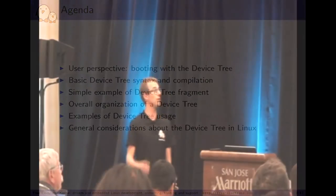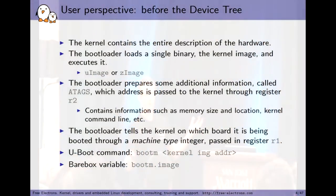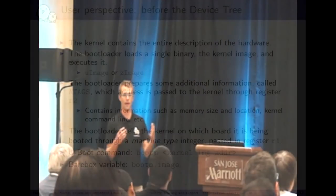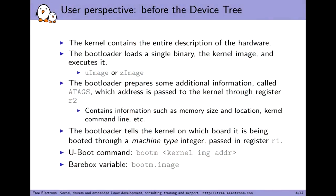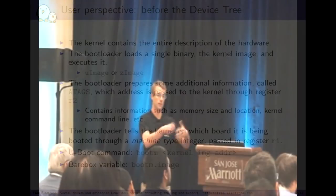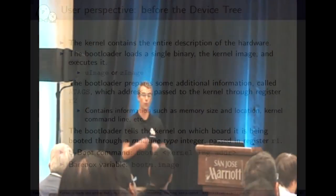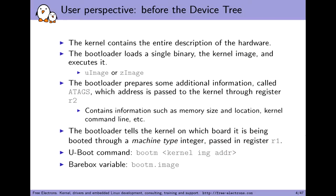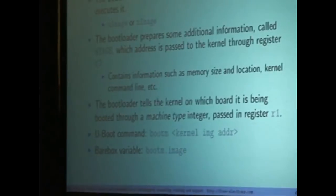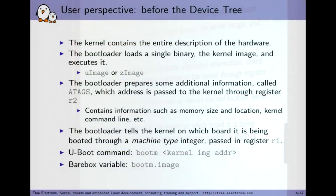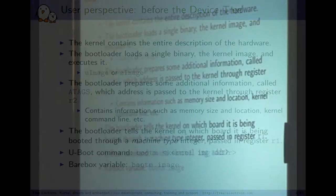Before the device tree, in the ARM world, the kernel contains a complete description of the hardware in the form of hard-coded C structures. The bootloader loads a single binary image into memory — the kernel image — and runs it. This image is either a U-image when you use the U-boot bootloader or a Z-image if you use another bootloader. The bootloader also prepares a bunch of information called ATAGS that encode information such as the memory size and location, the kernel command line, and other information the kernel needs to start running on the platform. The bootloader also needs to tell the kernel on which board it is running, and the ARM world has a concept of machine types that were uniquely associated to each board or platform.